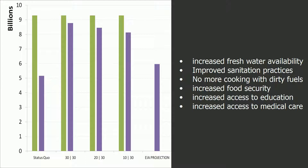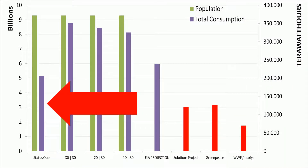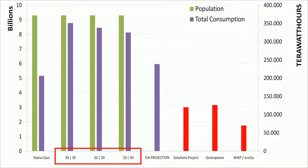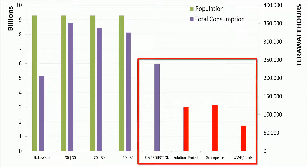We built four models: a status quo in which energy per capita remains the same in OECD and non-OECD countries; a 30% decrease of energy per capita for OECD countries; and a 10, 20, or 30% increase of energy per capita for non-OECD countries. As a reference, I have included the energy models of the Energy Information Administration, the Solutions Project, Greenpeace, and the World Wildlife Fund.